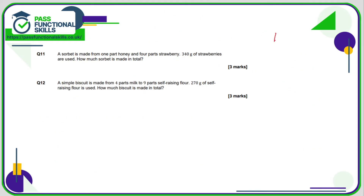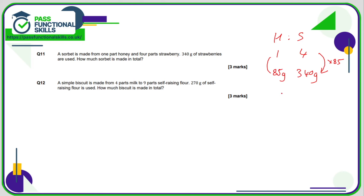Question 11: the ratio of honey to strawberry is 1 to 4. If we're using 340 grams of strawberries, how many times greater is 340 than 4? 340 divided by 4 is 85. So we're scaling the ratio up 85 times: 1 times 85 is 85 grams of honey. 85 plus 340 is 425, so 425 grams of sorbet in total.